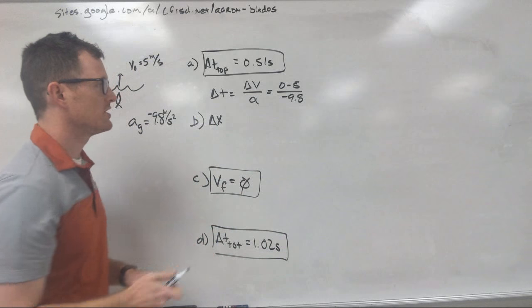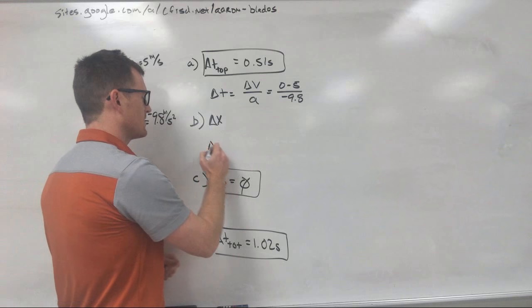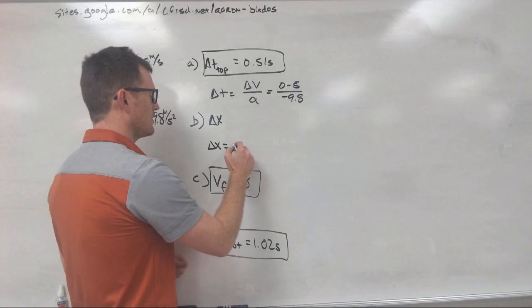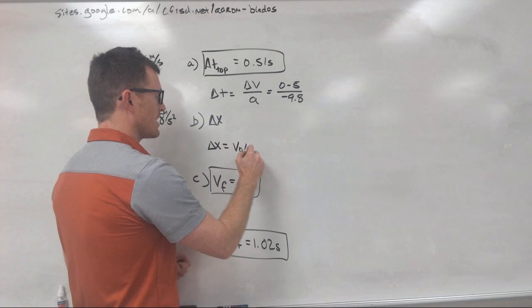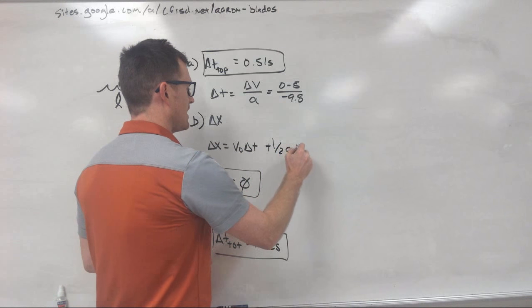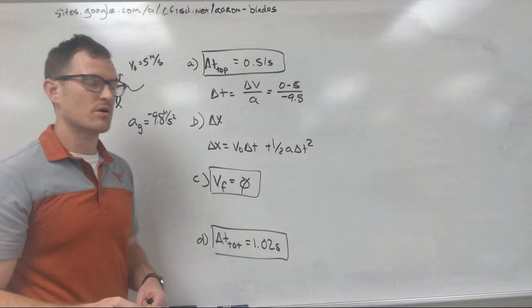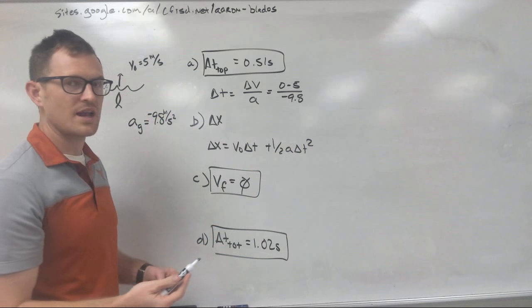Lastly, we're going to solve for our delta X, the maximum height of the fish. Delta X equals original velocity times delta T plus one-half A delta T squared. We've been given all of these things except for delta X, so let's go ahead and plug these in.